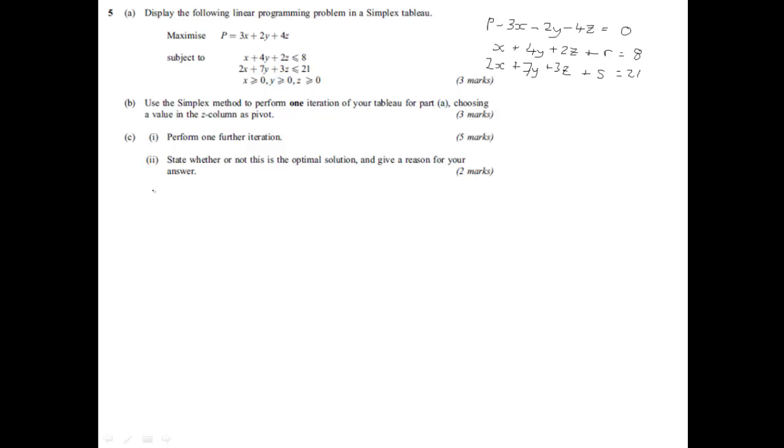Okay, so now what we do is we set up our tableau, our top columns p, we then have x, y, z, r, and s, and then we have a total for each row here. So first one then, and we just want the coefficient, how many of each, so the objective functions are top line. We've got 1p, minus 3x, minus 2y, minus 4z, and we've got no slack variables in the objective function, and the total's zero.